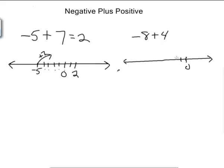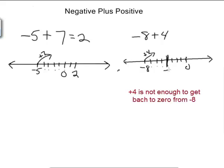And I go back 1, 2, 3, 4, 5, 6, 7, 8. Start here at negative 8. And just like before, I go to the right 4. So I go up 1, 2, 3, 4. And that puts me right here at negative 4. So negative 8 plus 4 is negative 4.